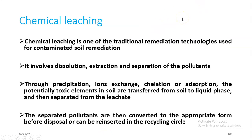Chemical leaching is one of the traditional remediation technologies used for contaminated soil remediation. It involves dissolution, extraction, and separation of pollutants through precipitation, ion exchange, chelation, or adsorption. The potentially toxic elements in soil are transferred from soil to liquid phase and then separated from the liquid. The separated pollutants are then converted to the appropriate form before disposal or can be reinserted in the recycling circle.